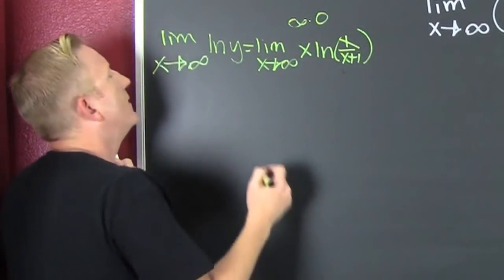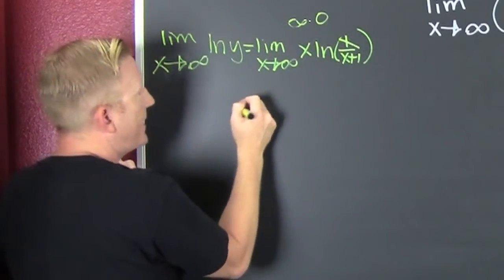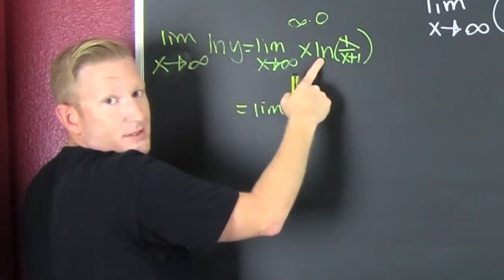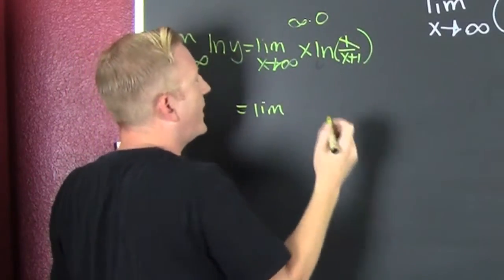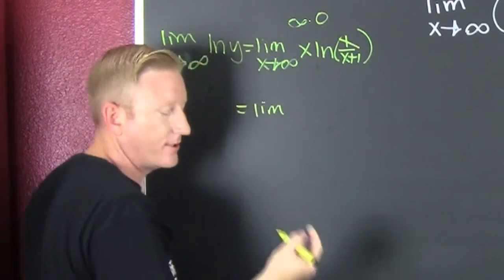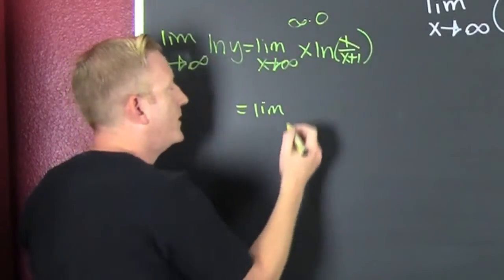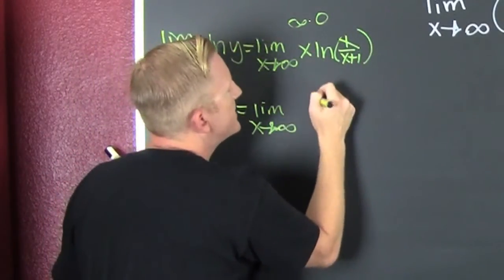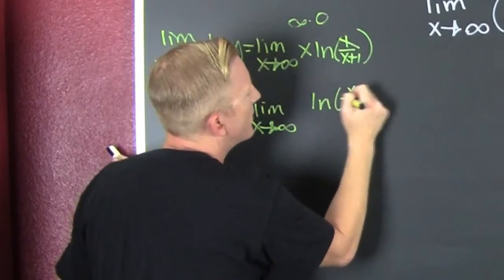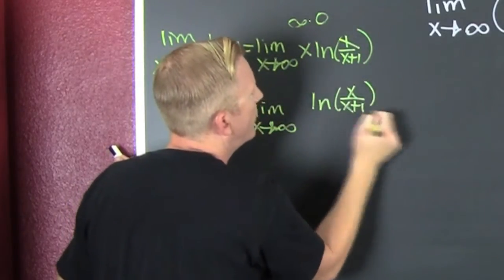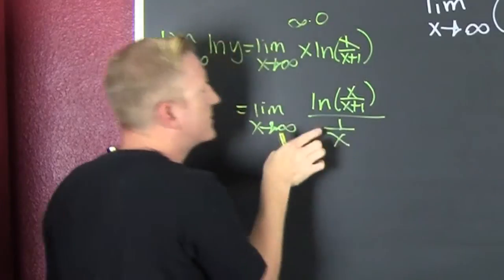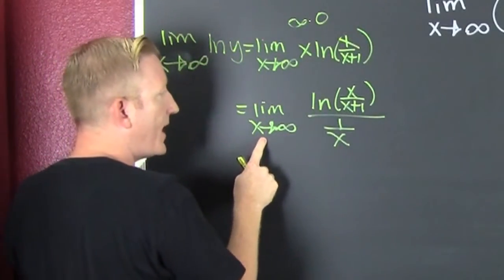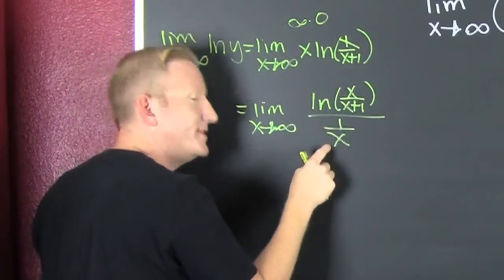We can rewrite it as the limit keeping the natural log on top. So this is the natural log of X over X plus one, over one over X. Now what do we have? We have a zero over zero.